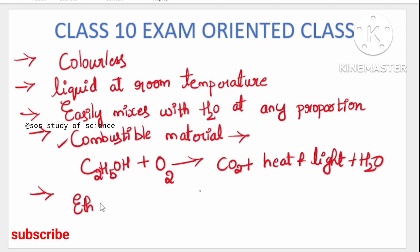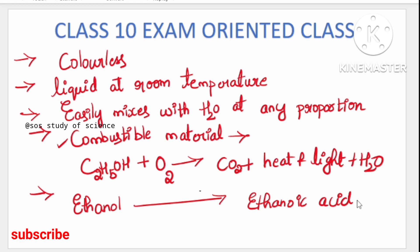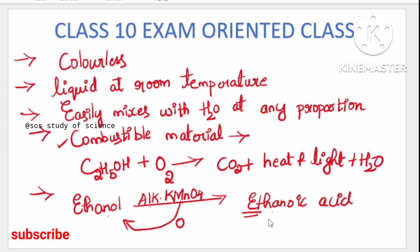We already discussed the conversion of ethanol to ethanoic acid under oxidation reactions. Ethanol can be converted into ethanoic acid by adding an oxidizing agent — here the oxidizing agent is alkaline potassium permanganate. This potassium permanganate adds one oxygen atom to ethanol to convert it into ethanoic acid.